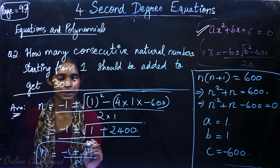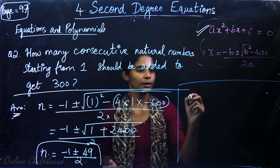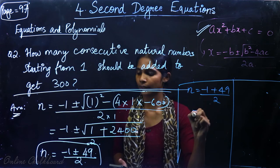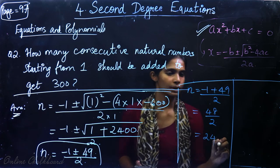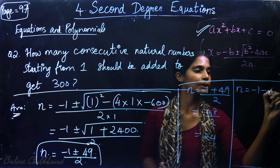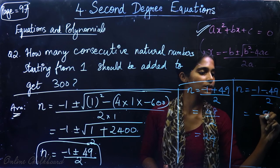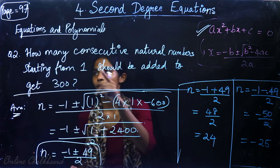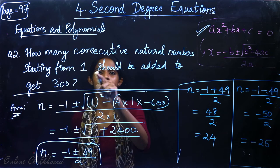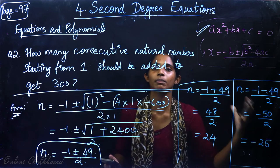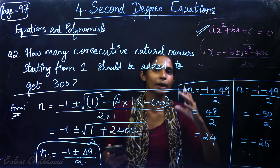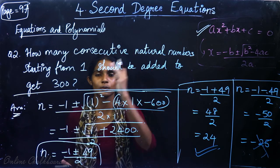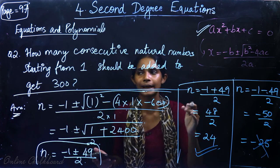We get n equal to minus 1 plus or minus 49 divided by 2, giving two possible cases. Case 1: n equals minus 1 plus 49 divided by 2, which is 48 divided by 2, equal to 24. Case 2: n equals minus 1 minus 49 divided by 2, which is minus 50 divided by 2, equal to minus 25. Since n must be a natural number, minus 25 is not valid. So we have to add the first 24 numbers: 1 plus 2 plus 3 plus ... plus 24 equals 300.